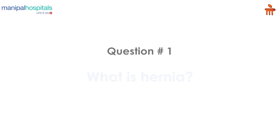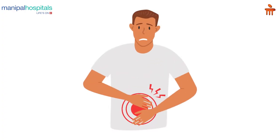Today I will be talking about the most common problem in our general population — it is hernias. In common language, a hernia is a protrusion of any body part through the wall that contains it, through a weak spot.